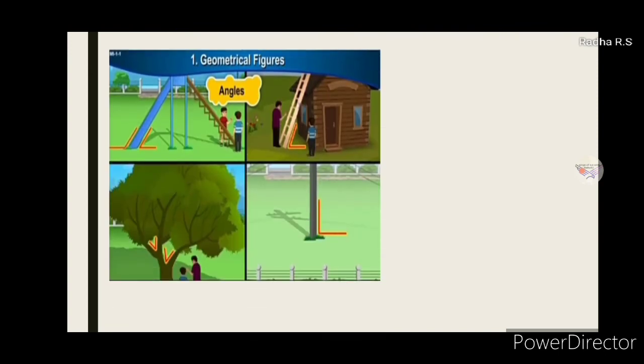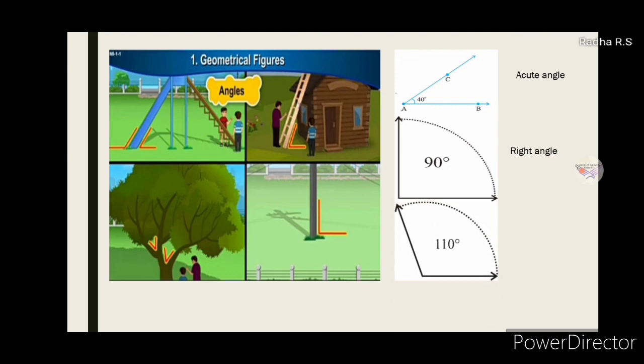What we discussed today? We discussed what is meant by angle and three types of angles. First one is acute angle which is less than 90 degrees. Right angle whose measure is 90 degrees. And obtuse angle bigger than 90 degrees but less than 180 degrees.